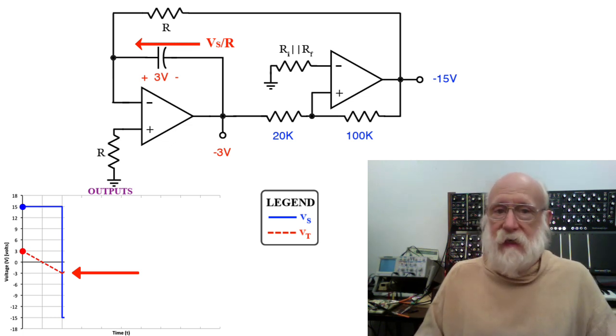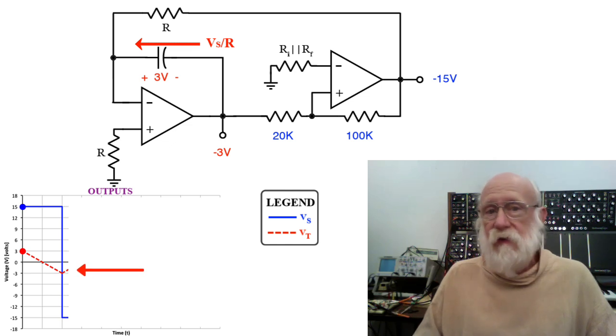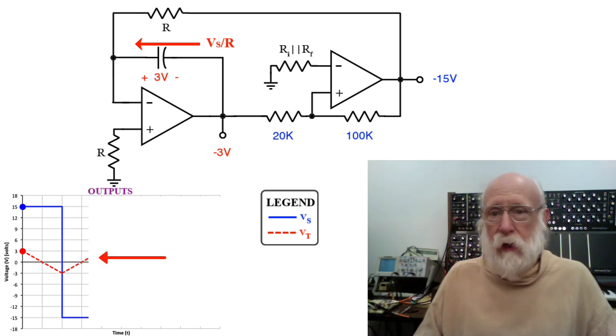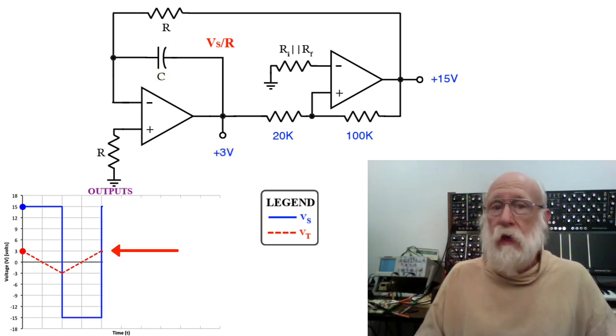Now that of course means that V sub T, which is the inverse of V sub C, is going up. Eventually, the output of the integrator reaches 3 volts, and when that happens, the Schmidt trigger switches back to plus 15, and now we're back to where we originally started with our initial assumption, and the entire process repeats.